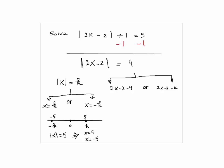So in this case, we have 2X minus 2 equals 4, and 2X minus 2 equals negative 4. Let's change that K to negative 4. So we solve for this.